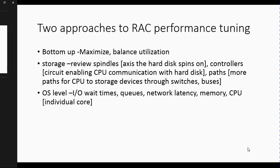By laying out these paths using different components like switches and buses, you will achieve higher performance for your RAC environment. At the OS level, you should be looking at IO wait times, queues, network latency, memory, and CPU. That covers the bottom-up approach.